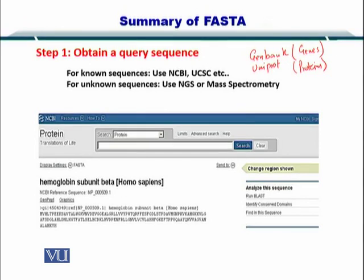To start with, once you want to employ the Fast Alignment Algorithm, the first step is to obtain the sequence or the IDs for the proteins or the genes. If you know the sequences, you can simply go to NCBI, UniProt, or SwissProt and obtain the protein sequence. In the case of genes with known sequences, you can go to GenBank and obtain the sequence.